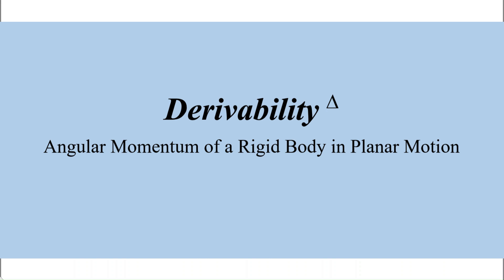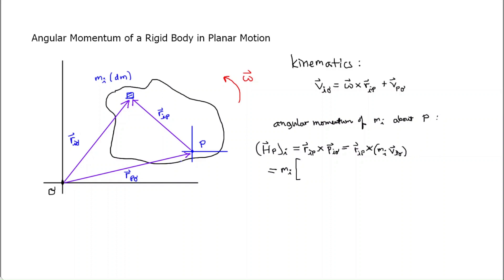Hello and welcome back to Derivability. Here we're going to talk about some mechanical engineering again — angular momentum of a rigid body in planar motion. I've recorded several other videos that lead up to this one, having to do with the kinematics of a rigid body in planar motion. Angular momentum is the moment of the linear momentum — kind of an R cross P. We'll use the letter H for angular momentum.